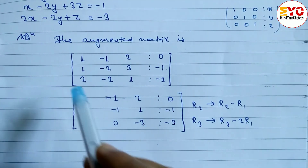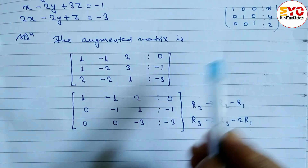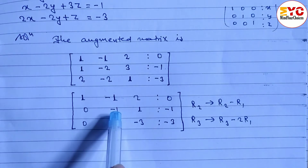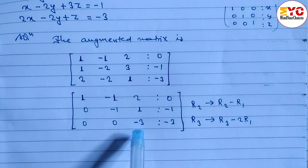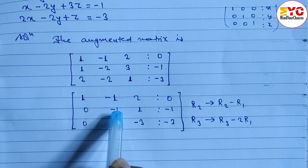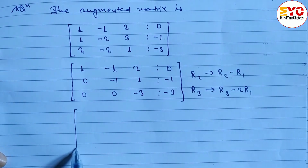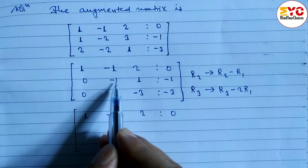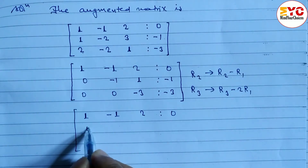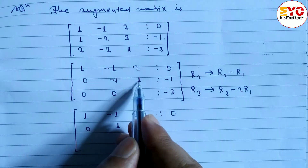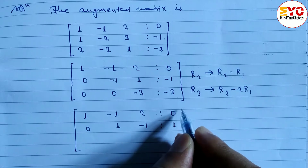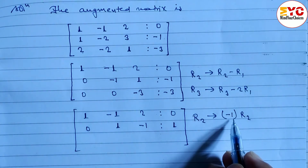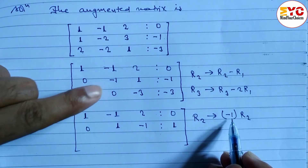Now we have 1, 0, 0 in column 1. We need a leading 1 in row 2. The pivot is -1, so we apply R2 → -1 × R2. Multiplying each entry of row 2 by -1: 0×(-1)=0, -1×(-1)=1, 1×(-1)=-1, and -1×(-1)=1. The new second row is 0, 1, -1, 1.